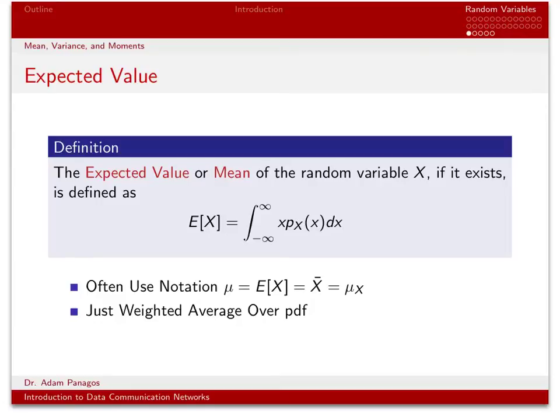When dealing with random variables, there are a few quantities that we're often concerned with knowing or computing. One of those things is what we call the mean of the random variable, also called the expected value. When we talked about Gaussian random variables, we said that the mean was the quantity m, sometimes denoted mu. That mean told us where the Gaussian bell-shaped curve was centered on the real line.